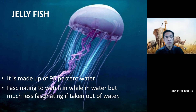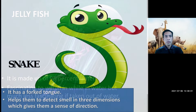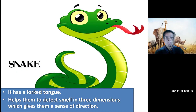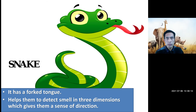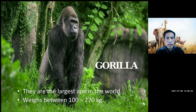Jellyfish is fascinating to watch while in water, but much less fascinating if taken out of water, because it is made up of 95 percent water. About snakes — a snake has a forked tongue. This forked tongue helps them to detect smell in three dimensions, which gives them a sense of direction.